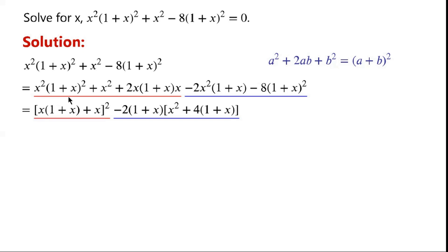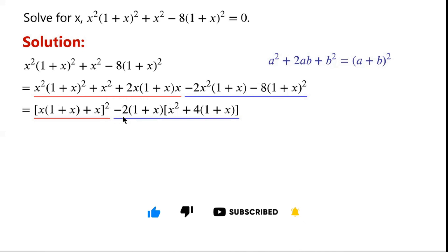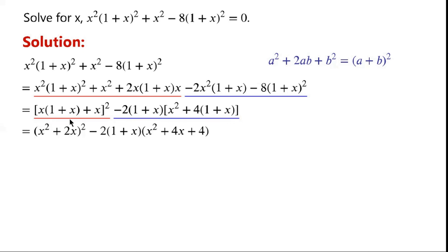By applying this, the terms underlined in red can now be written as the perfect square (x times (1 plus x) plus x) 4 squared. The terms underlined in blue have a common factor minus 2 times (1 plus x), so they can be written as minus 2 times (1 plus x) times x squared. The term underlined in red can be written as x squared plus 2x, or squared.